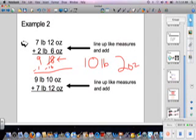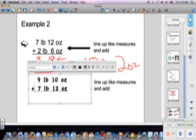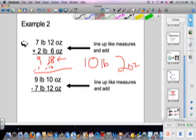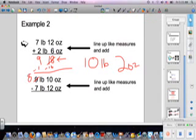Let's try another one. I have 9 pounds 10 ounces minus 7 pounds 12 ounces. I'm going to have to borrow a pound from this nine because 10 is smaller than 12. What I'm going to do is take a pound out and make this an eight. A pound is 16 ounces, so I'm going to add that to 10 and get 26 ounces.